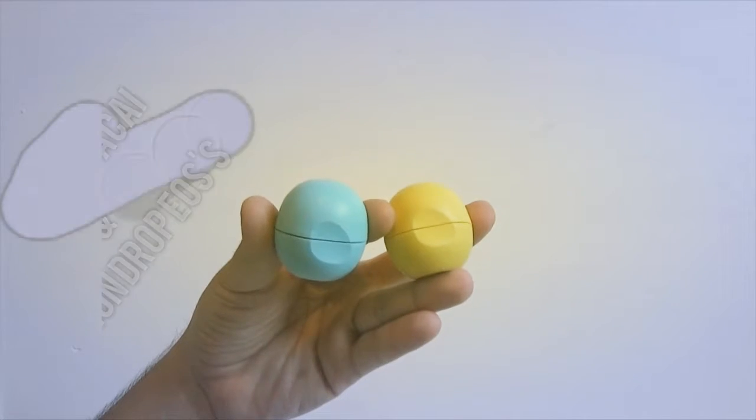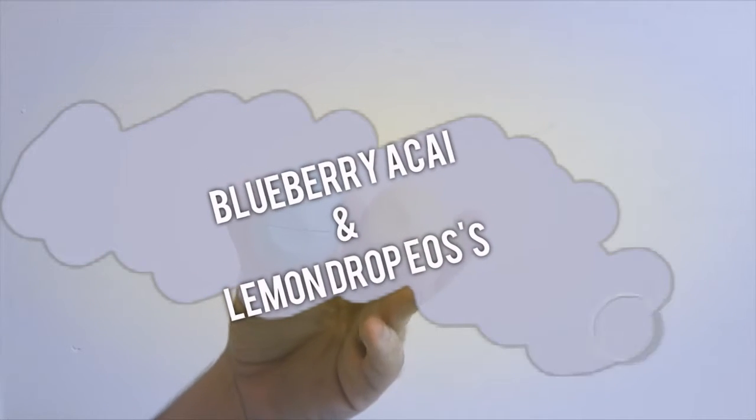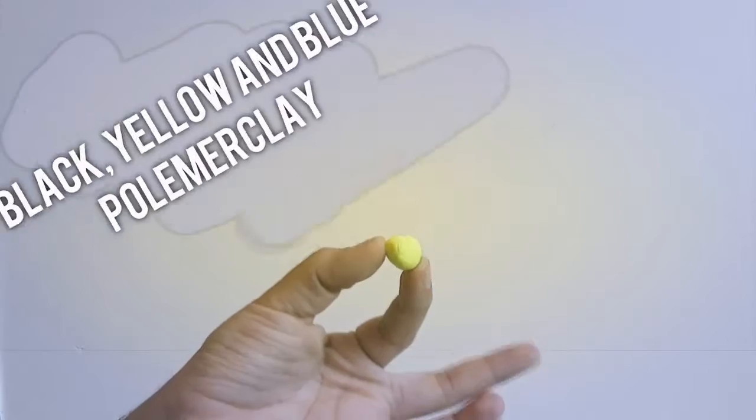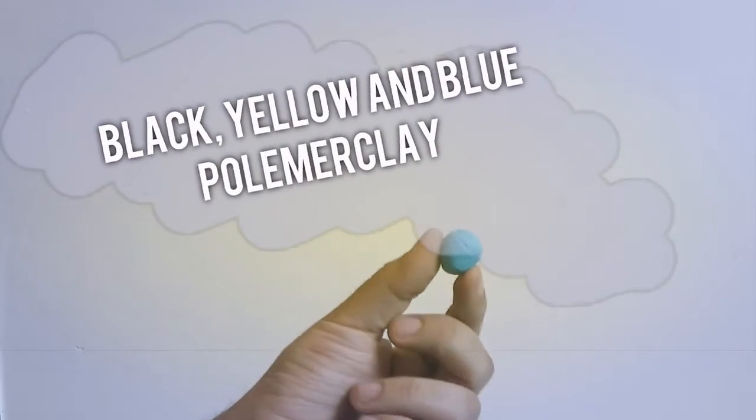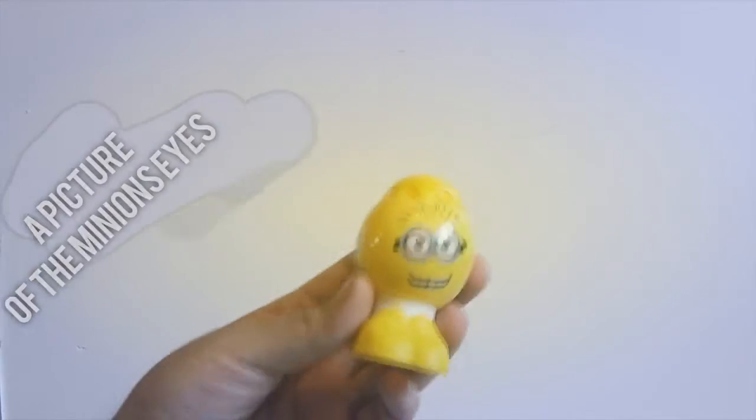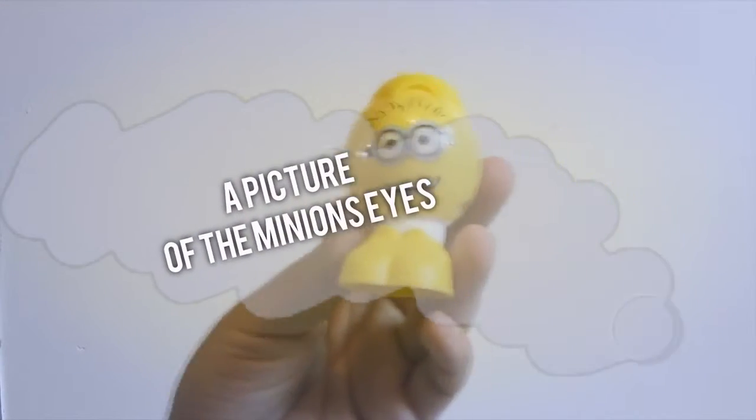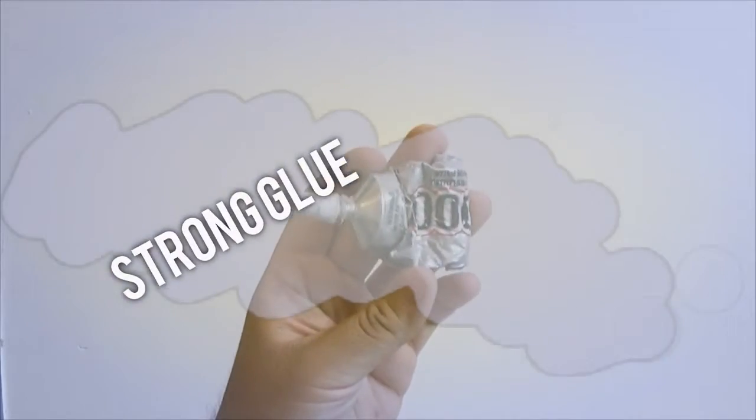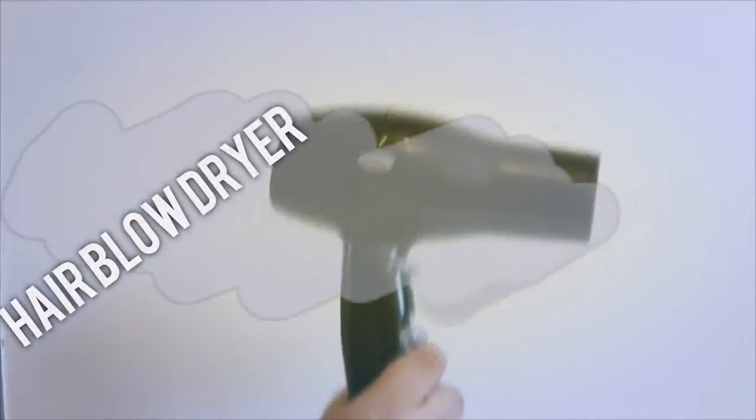To do this, you'll need two different kinds of EOS, the Blueberry Acai and the Lemon Drop, black, yellow, and blue polymer clay, baby wipes which are optional, hand sanitizer, a picture of the Minion eyes and the mouth, a strong glue, an X-Acto knife, and finally, a blow dryer.